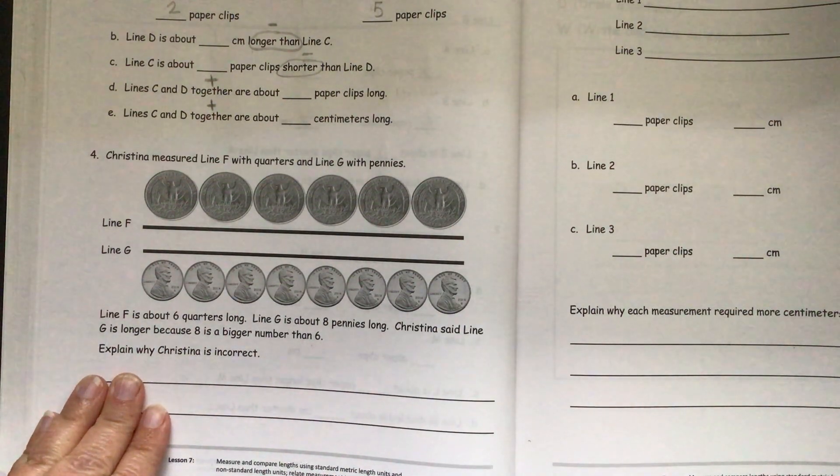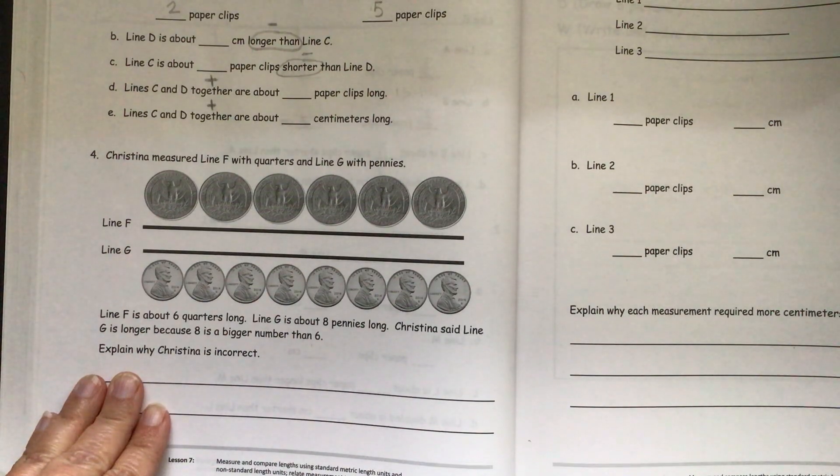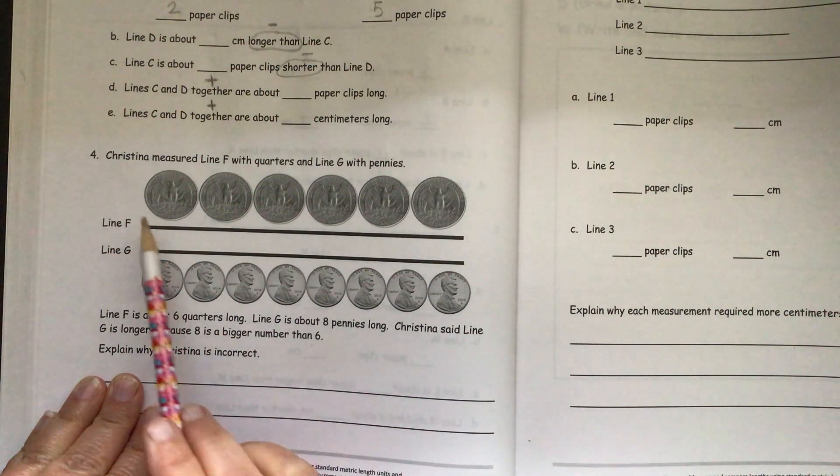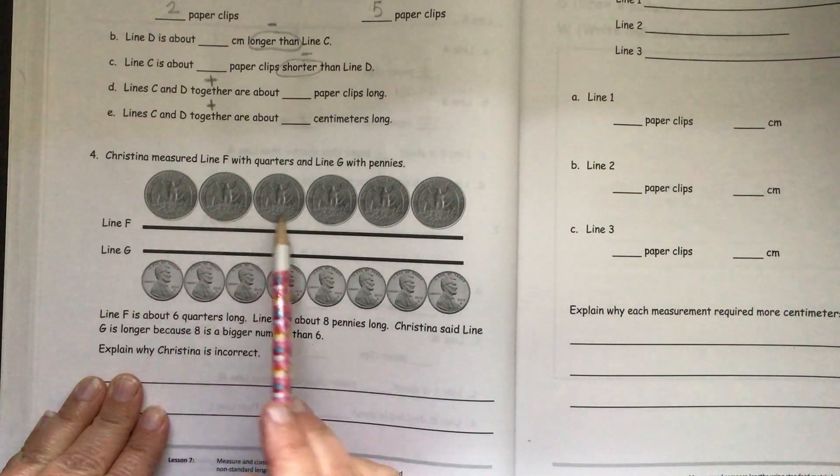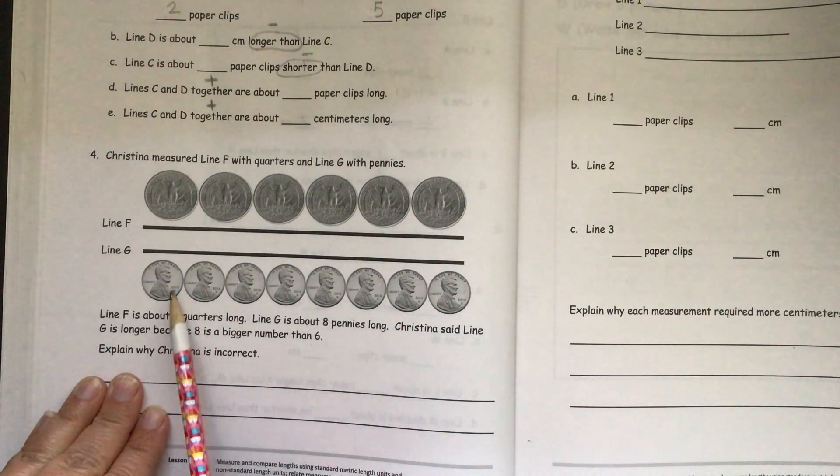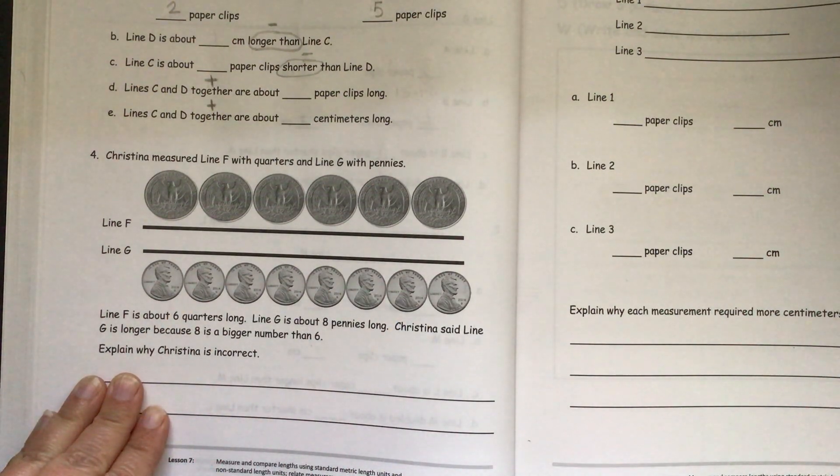So you can see that the quarters are larger than the pennies are. So it's going to take fewer of the quarters to measure something than the amount of pennies. You'll need more pennies because they're smaller.